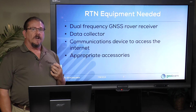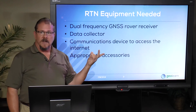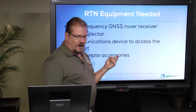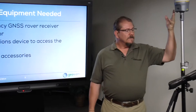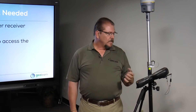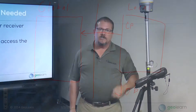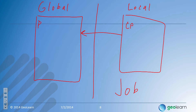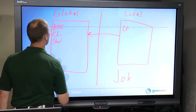The equipment you need for an RTN survey — I'm going to walk over to the tripod now — is a dual frequency receiver, a data collector, and you need some sort of modems. So you have all of your back of curbs, center line, sidewalk.